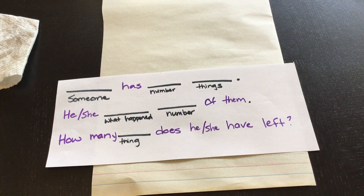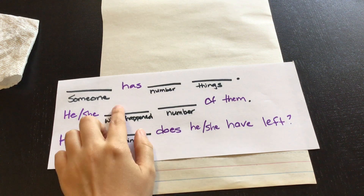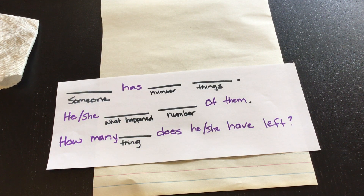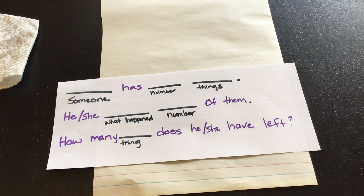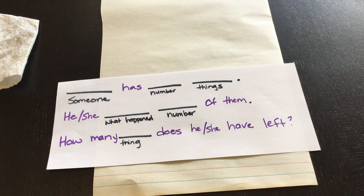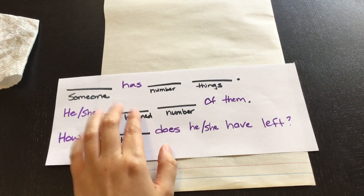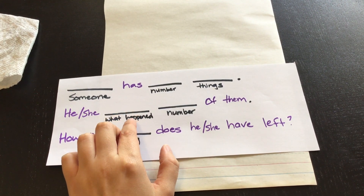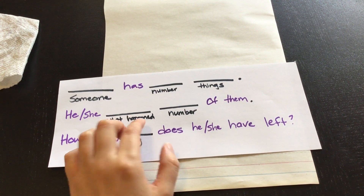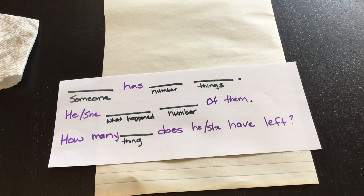It's pretty much the same as the addition one, except when we're adding we're always getting something — we use that word 'get' a lot. With subtraction, there are a lot of things that can happen to make us lose things. They can get lost, get broken, be thrown away, fly away, get eaten — all kinds of things. So we have to figure out this 'what happened' piece: what happened to make it not available to us anymore. That's one extra piece to the subtraction frame.